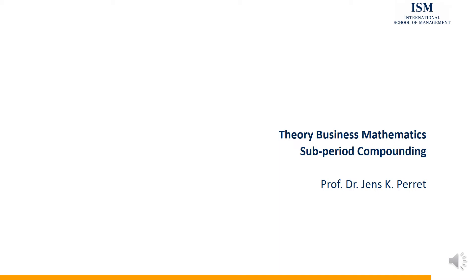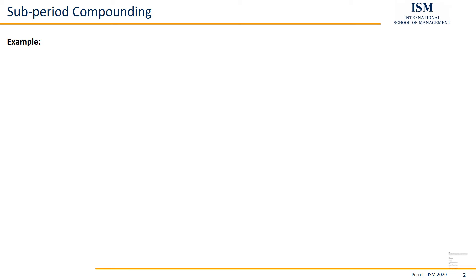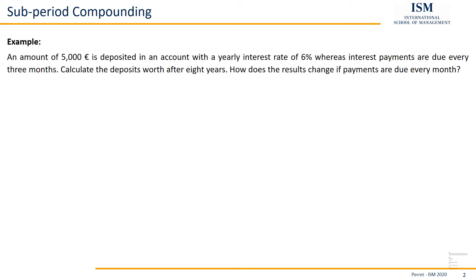In this unit we're going to talk about how to proceed if this no longer holds. We can illustrate this with an example. Here we have an amount of 5,000 euros which is deposited in an account with a yearly interest rate of 6%, whereas interest payments are due every 3 months. So we basically get interest on a quarterly basis. Calculate the deposit's worth after 8 years.